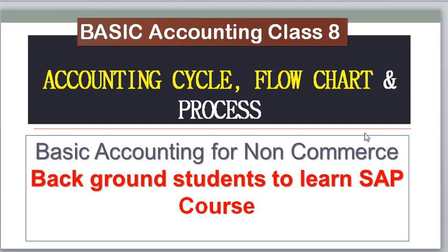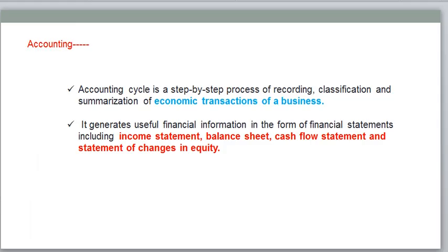Let's move to the topic. The accounting cycle generally starts with recording, after that classifying, and after that summarization. Recording means we need to record all the transactions which can be expressed in terms of money only. These are all business transactions — recording means we need to record all the transactions and events which we can express in terms of money. Recording into a book is called a journal — it's a primary book or a subsidiary book.